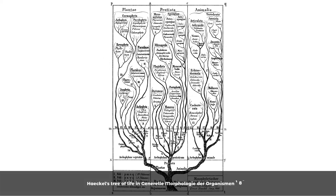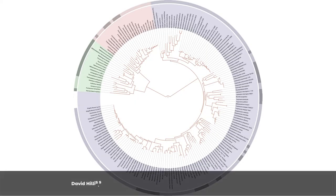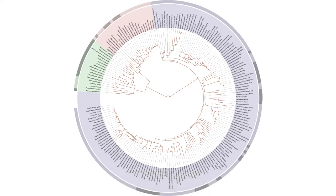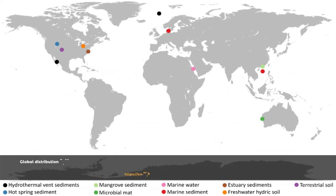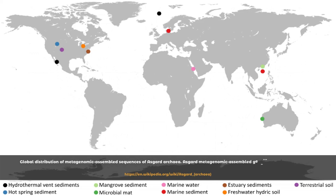As scientists continue to fill out the tree, the algorithms used to add branches will only get more efficient. This will help researchers resolve deeper, more ancient splits in the history of life. Our understanding of how life unfolded is still very much incomplete — questions like how eukaryotes emerged or how photosynthesis evolved remain unanswered because we don't have a tree that is stable enough to pinpoint where these key events happened. Beyond answering such fundamental questions, the simple joy of discovery motivates researchers like Eglit. The microbial world is a wide-open frontier. It's thrilling to explore what's out there.